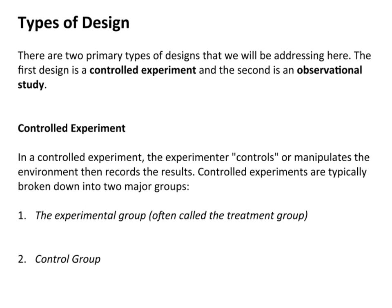Types of designs. When we do experiments, there are a couple of different designs that we need to talk about. There are two primary types of designs that we will be addressing here. The first we refer to as a controlled experiment, and the second is what we refer to as an observational study. One is an experiment and the other is a study.